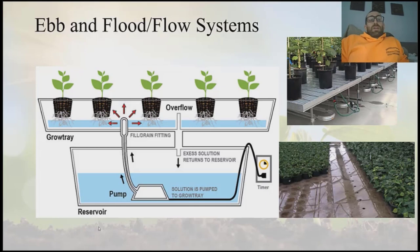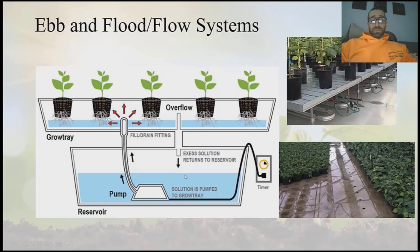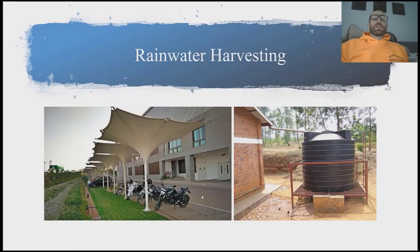The last irrigation type we'll look at are ebb and flood systems. In these systems, we flood either a bench or the floor of our greenhouse with water — typically with fertilizer included as well. That floods through the bench and water is taken up by the plants, and then any excess water is returned to a reservoir. This is a nice system because it conserves water — any excess gets brought right back into the system. This leads us to our last topic: rainwater harvesting.